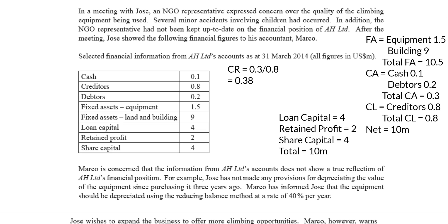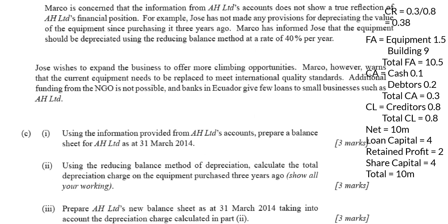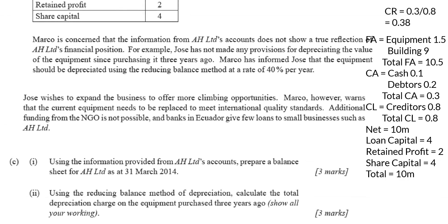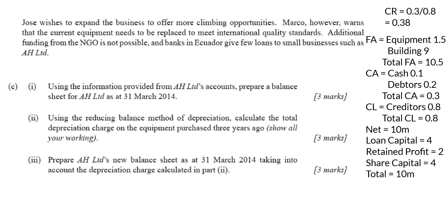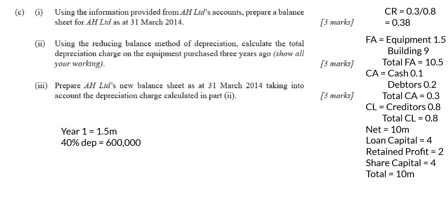Now let's look at the depreciation questions. Using the reducing balance method, the question asks to calculate the total depreciation charge on equipment purchased three years ago. The reducing balance percentage is in the case study — the equipment should be depreciated using a reducing balance method at a rate of 40% per year. So the equipment costs 1.5 million. Using 40% depreciation, convert to decimal: 1.5 million × 0.4 = 600,000 depreciation in year one.